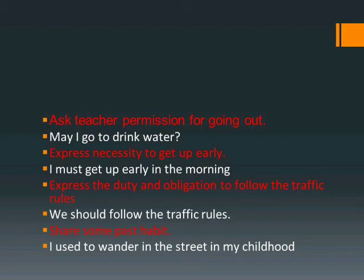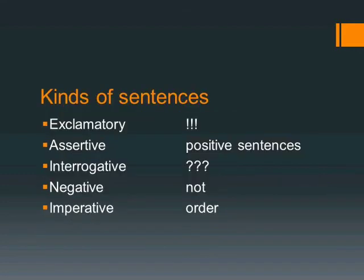Kinds of sentences: Exclamatory sentences use an exclamation mark. Assertive sentences mein positive sentences aate hain. Interrogative mein question mark hota hai. Negative mein 'not' ka istamal hota hai. Aur imperative sentences mein koi order diya jaata hai, koi hukam diya jaata hai — like: bring me a glass of water, shut the door, open the window.